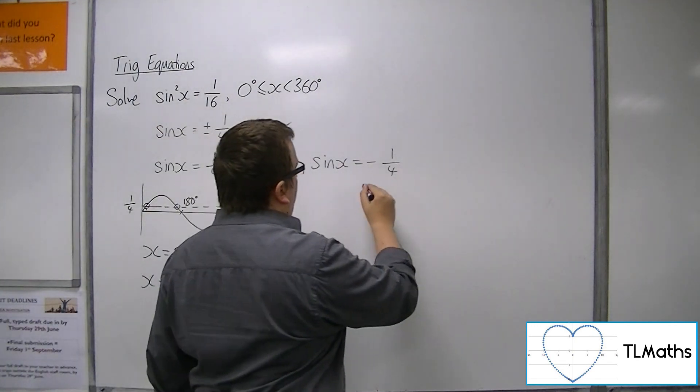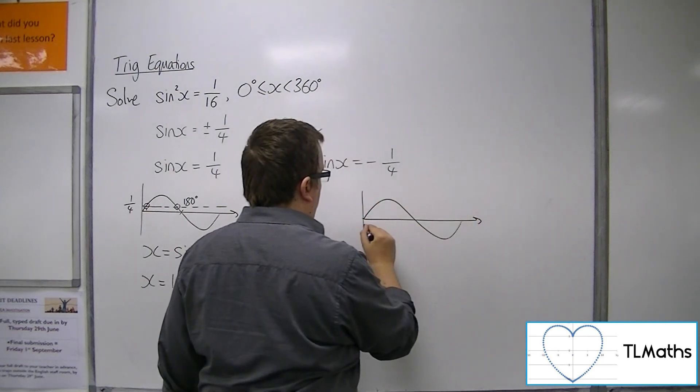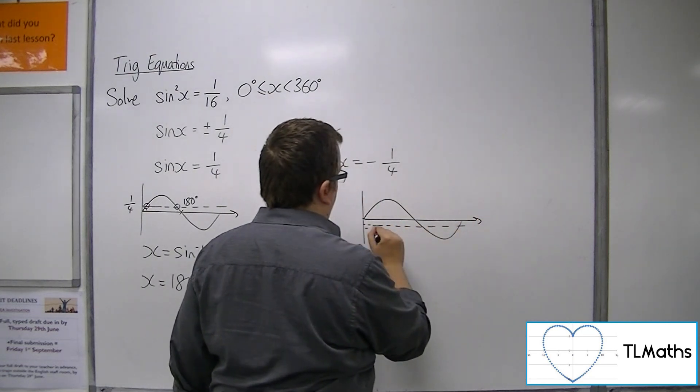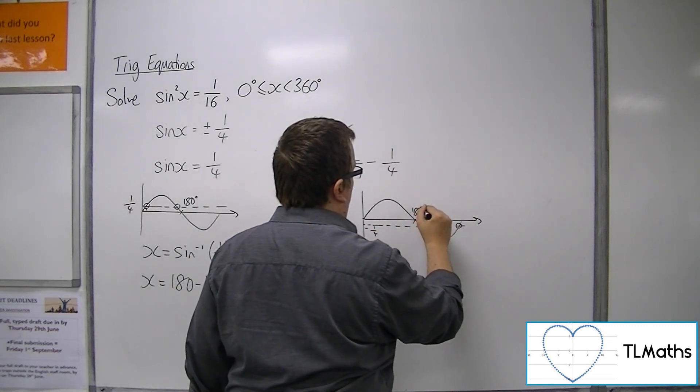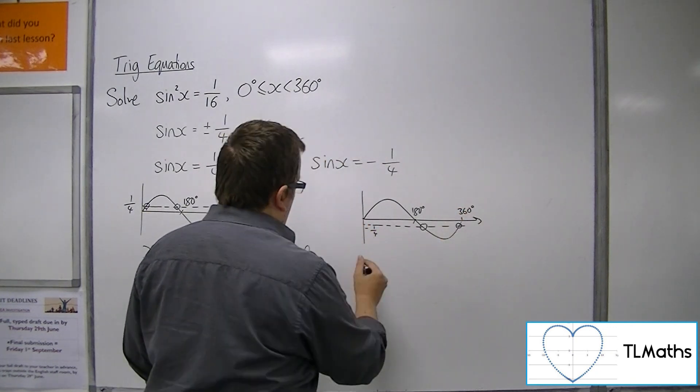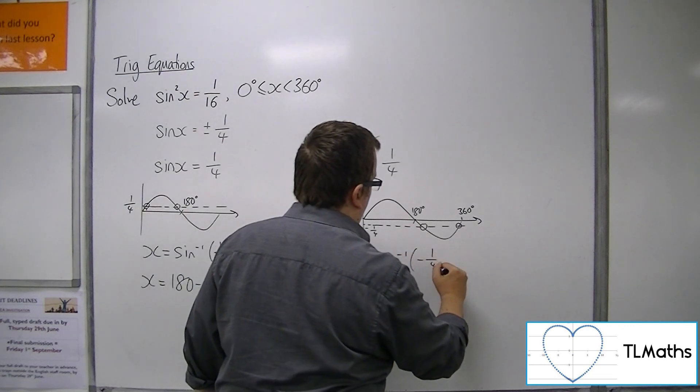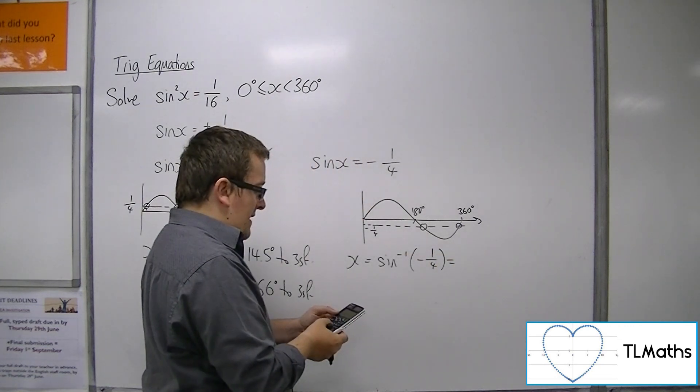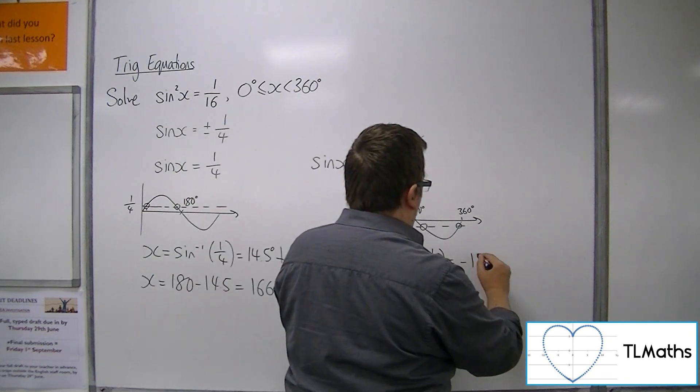Now, for sine x equals minus 1/4, minus 1/4 will be down here. And so the two solutions we're looking for over here, there's 180, there's 360. Now, if you inverse sine minus 1/4, you're going to get a negative value. You get minus 14.5 degrees.